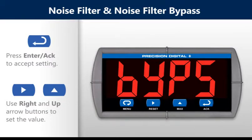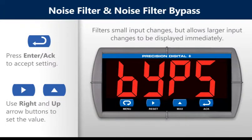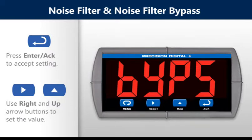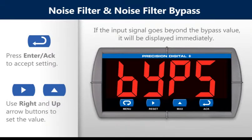This will bring you to the noise filter bypass menu. Setting the noise filter bypass value will allow the meter to filter small input changes but allow larger input changes to be displayed immediately. If the input signal goes beyond the bypass value, it will be displayed immediately with no averaging done on it.